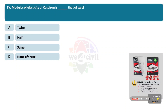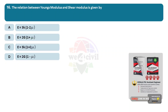Question 15: Modulus of elasticity of cast iron is dash that of steel. Options: A, twice. B, half. C, same. D, none of these. Answer is Option B, half. Question 16: The relation between Young's modulus and shear modulus is given by? Options: A, E = 3K(1 - 2ν). Option B, E = 2G(1 + μ). Option C, E = 3K(1 + 2ν). Option D, E = 2G(1 - μ). Correct answer is Option B, E = 2G(1 + μ).